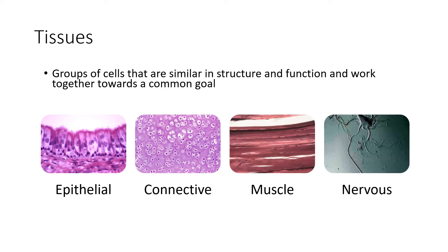There are four main tissues of the body. For lecture purposes, we're going to talk broadly about the function, overall location, and role of each tissue. For lab purposes, we're going to focus on visual identification of each tissue.